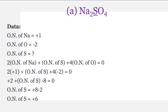Is mein first question hai sodium sulfate Na2SO4, jis mein sulfur ko underline kiya gaya hai — yaani sulfur ka oxidation number humne find out karna hai. Data: oxidation number of sodium is equal to plus one, kyunki sodium group one mein shamil hai. Oxidation number of oxygen is equal to minus two. Oxidation number of sulfur humne find out karna hai. Formula: two multiplied by oxidation number of sodium plus oxidation number of sulfur plus four multiplied by oxidation number of oxygen equals zero. Put the values of sodium and oxygen and simply calculate — oxidation number of sulfur is equal to plus six.